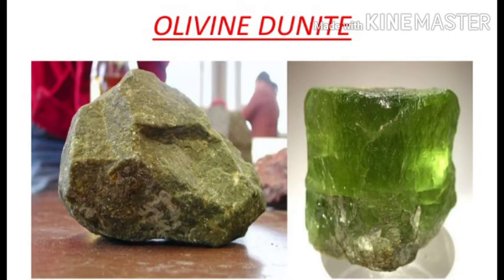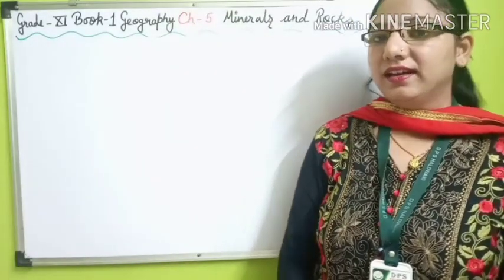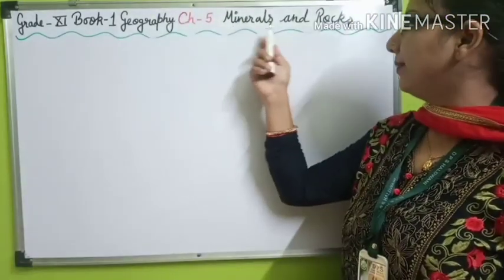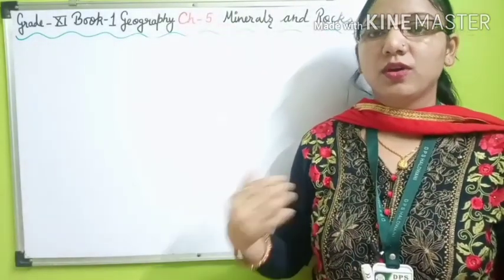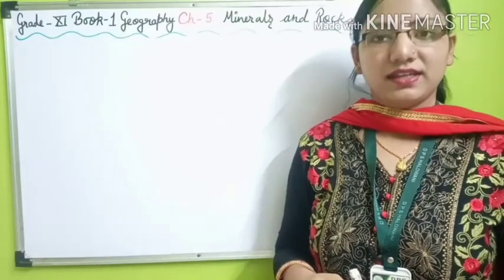Olivine's major elements are magnesium, iron, and silica. It is resistant to weathering but susceptible to metamorphism, used in jewelry, and is usually a greenish crystal often found in basaltic rocks. With that, the first part of the chapter on Minerals and Rocks — the mineral section — is complete. We will cover rocks in the second part.